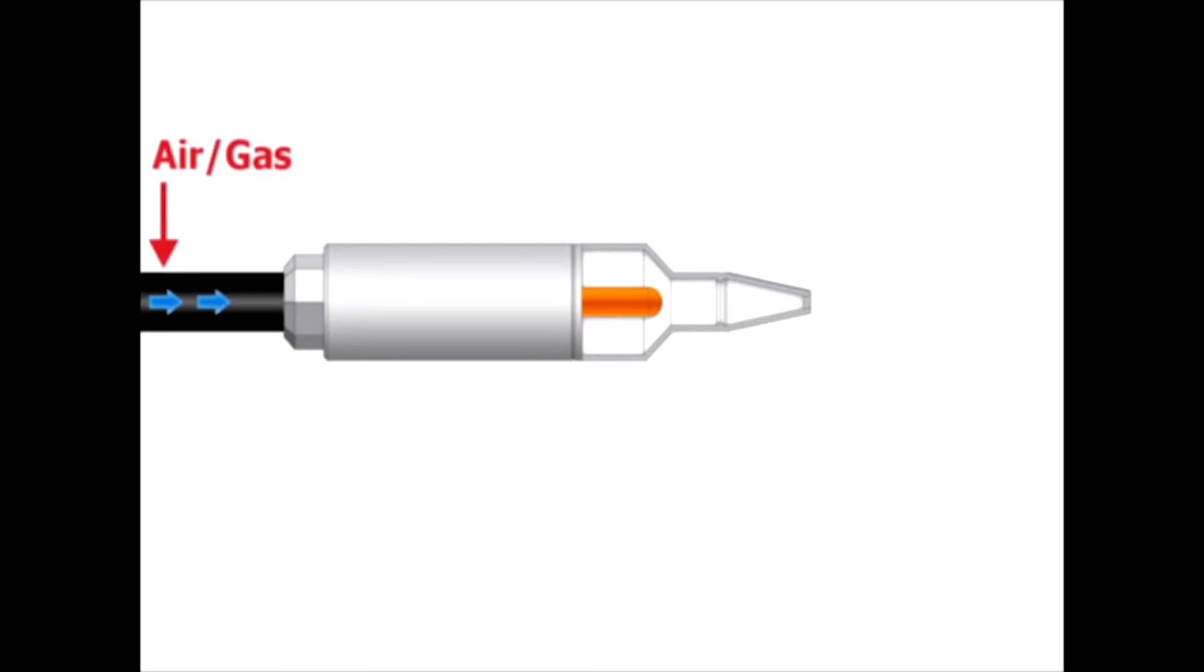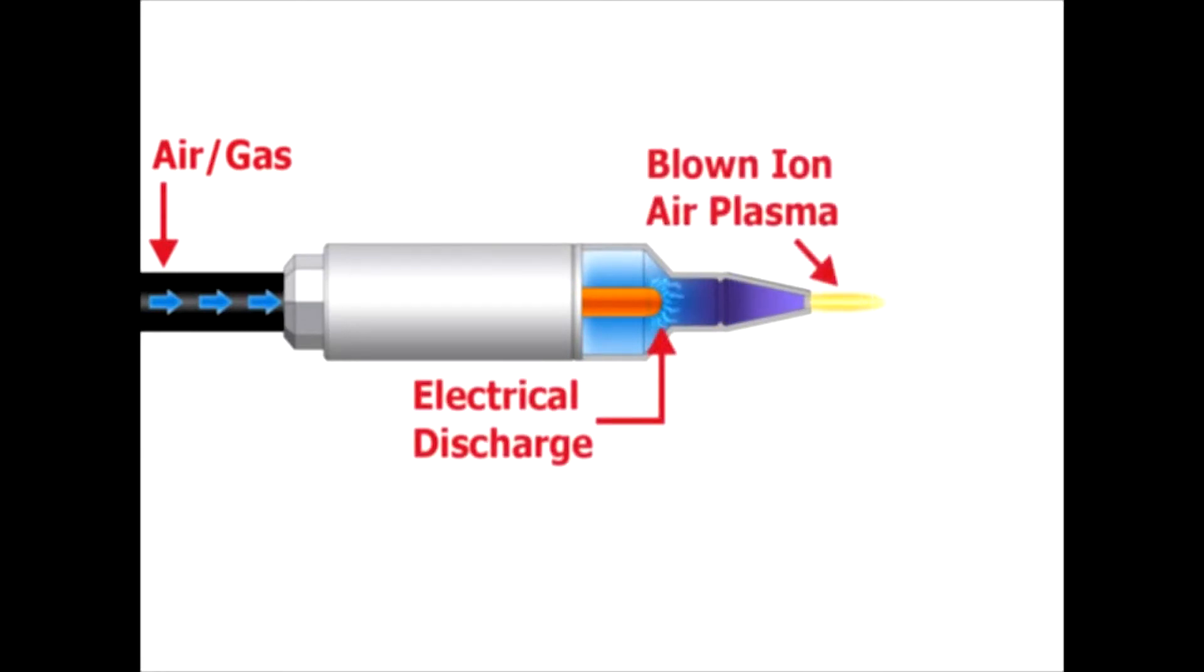How blown ion air plasma works: blown ion air plasma systems push pressurized air past a single electrode which discharges inside the treater head. The electrode creates positively charged ions in the surrounding air particles.